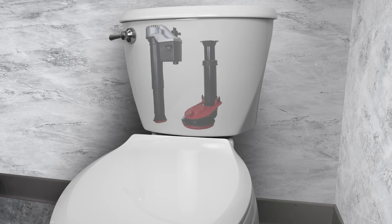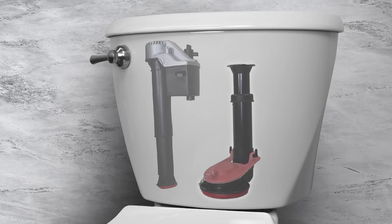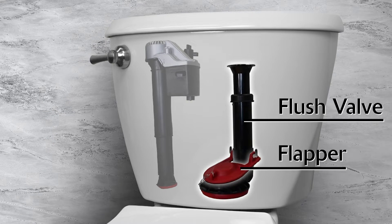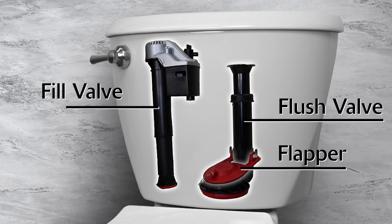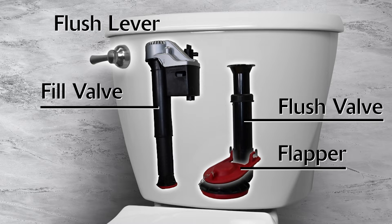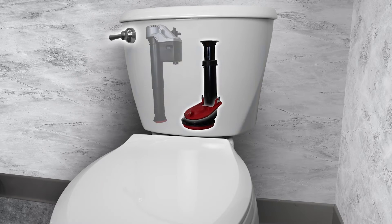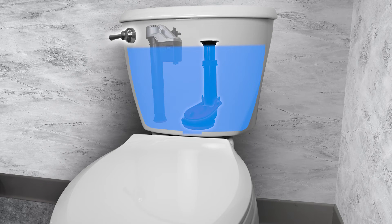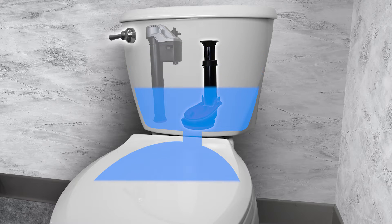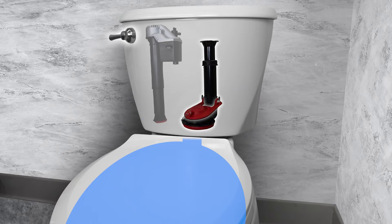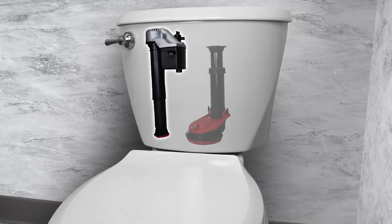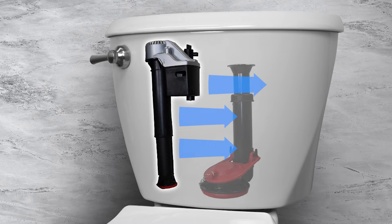The toilet tank has several key parts: the flush valve, the flapper, the fill valve, and the flush lever. The flush valve, flapper, and flush lever work together to flush water into the bowl, while the fill valve replenishes the water in the tank for the next flush.